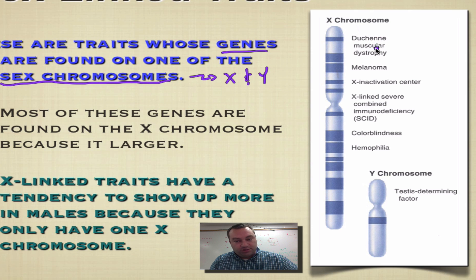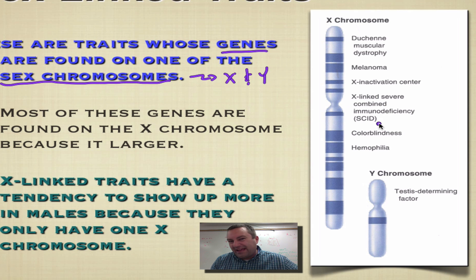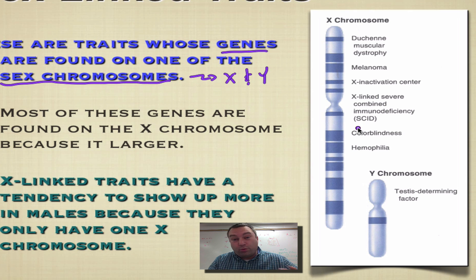Genes found on the X chromosome include Duchenne's muscular dystrophy, which we'll cover at the end of this screencast; melanoma, which is an inherited form of skin cancer; the X inactivation center, covered in the next episode; a type of immunodeficiency called severe combined immunodeficiency, or SCIDS — you've probably seen a show about a boy in a bubble; colorblindness; and hemophilia.